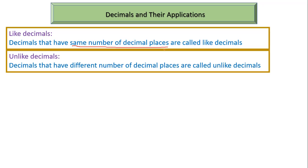Next we'll learn the meaning of unlike decimals. Decimals that have a different number of decimal places are called unlike decimals. Which means if the number of decimal places are not the same, those decimals will be called unlike decimals.